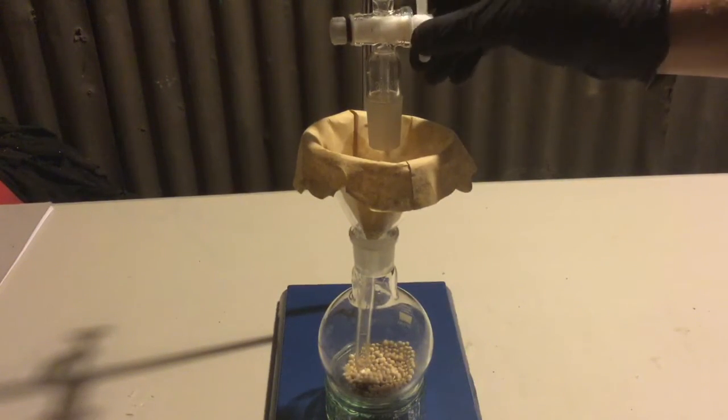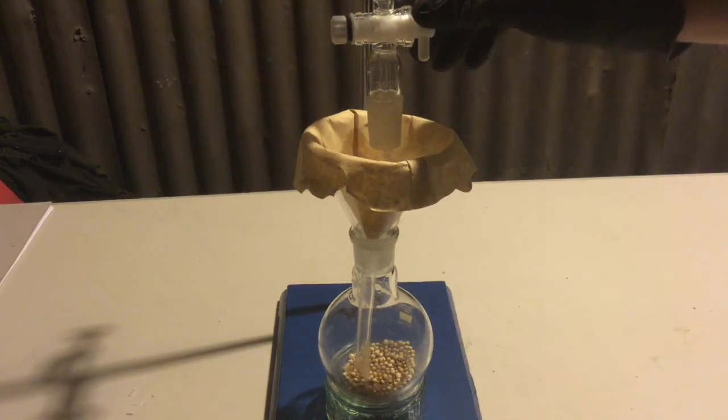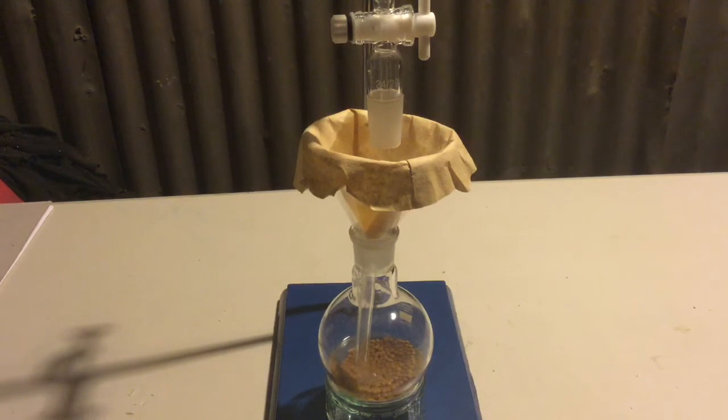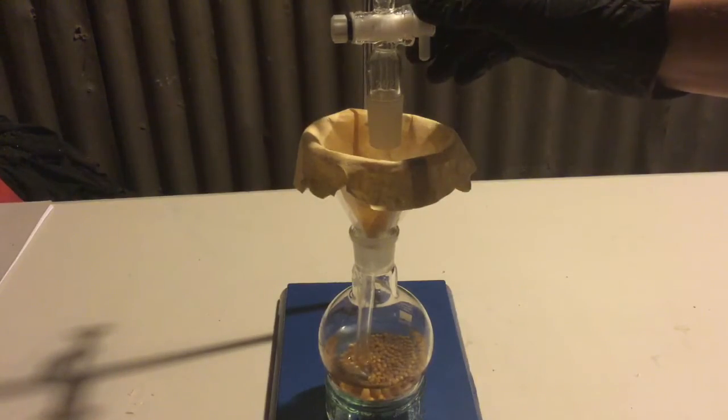The DCM was then filtered into a flask containing a fair amount of 3A molecular sieves. These sieves help absorb any of the water remaining from the water washings. The flask was then given a shake and allowed to sit overnight.